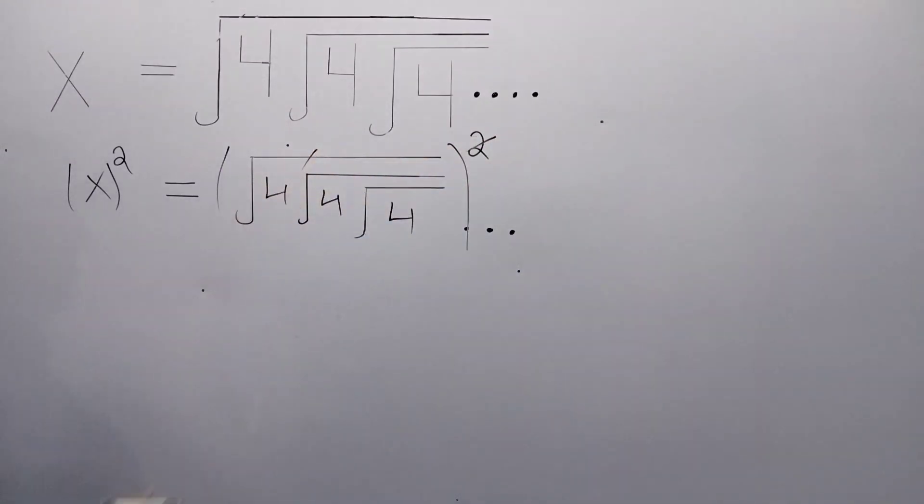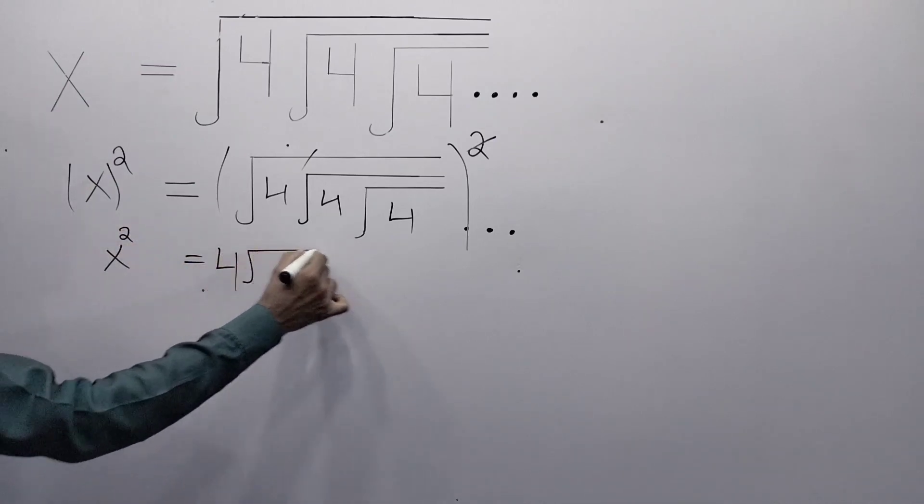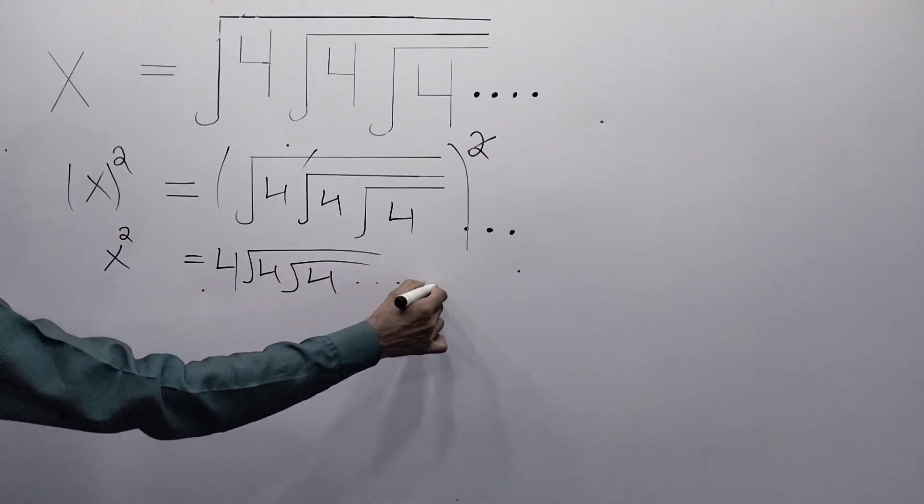The square is cancelled out by the square root. We get x squared is equal to 4 times the square root of 4, and again square root of 4, and so on.